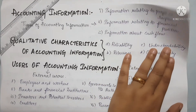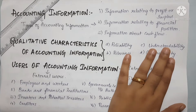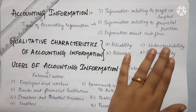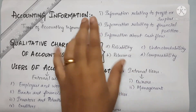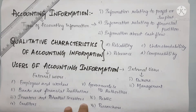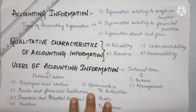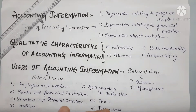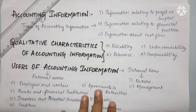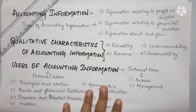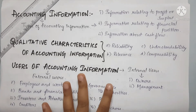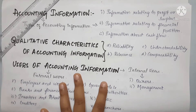As per Schedule 3 Part 2 of the Companies Act 2013, this is the company-related information statement. Next is the not-for-profit organization, which operates with a service motive, so it is classified as a not-for-profit organization.